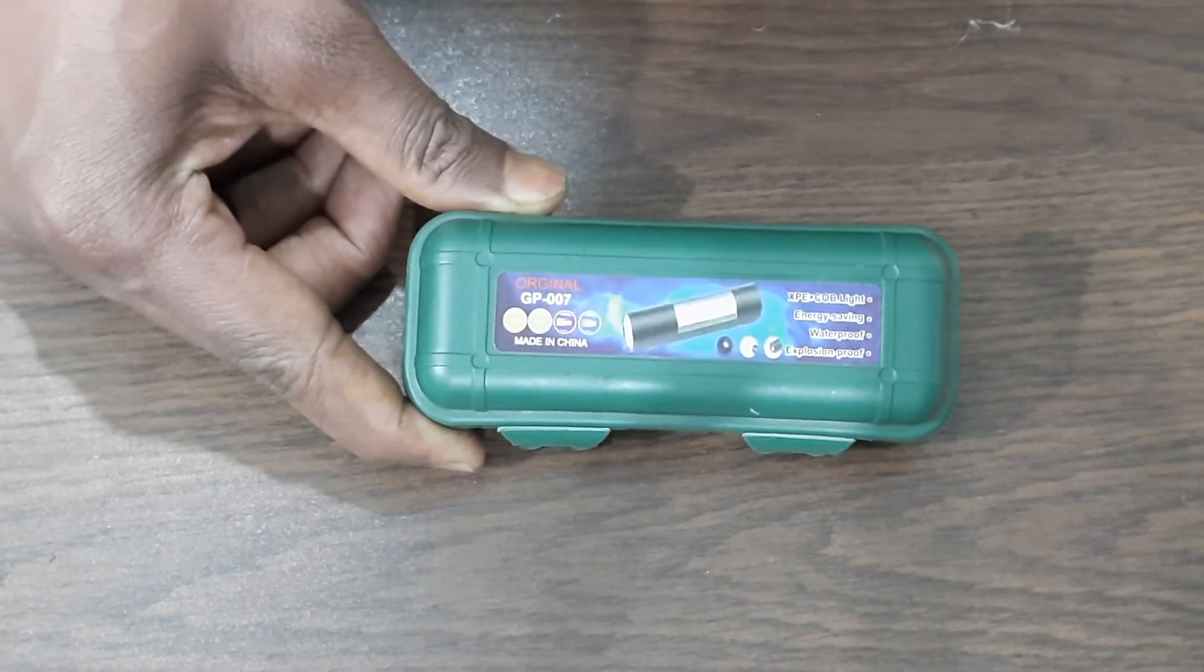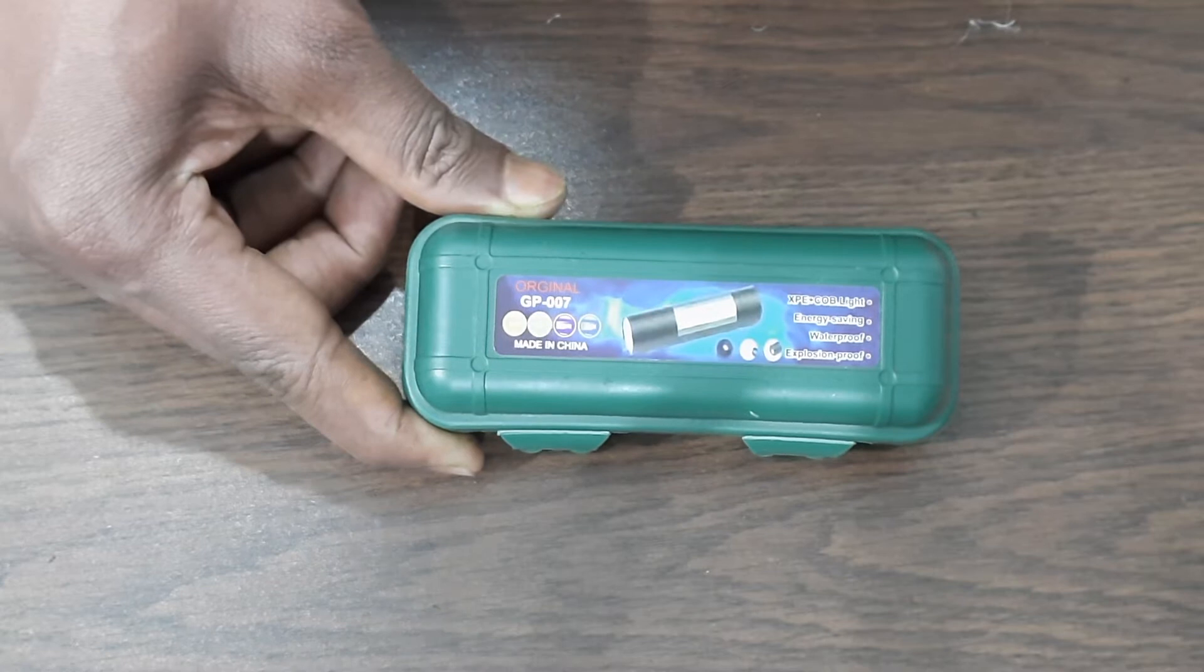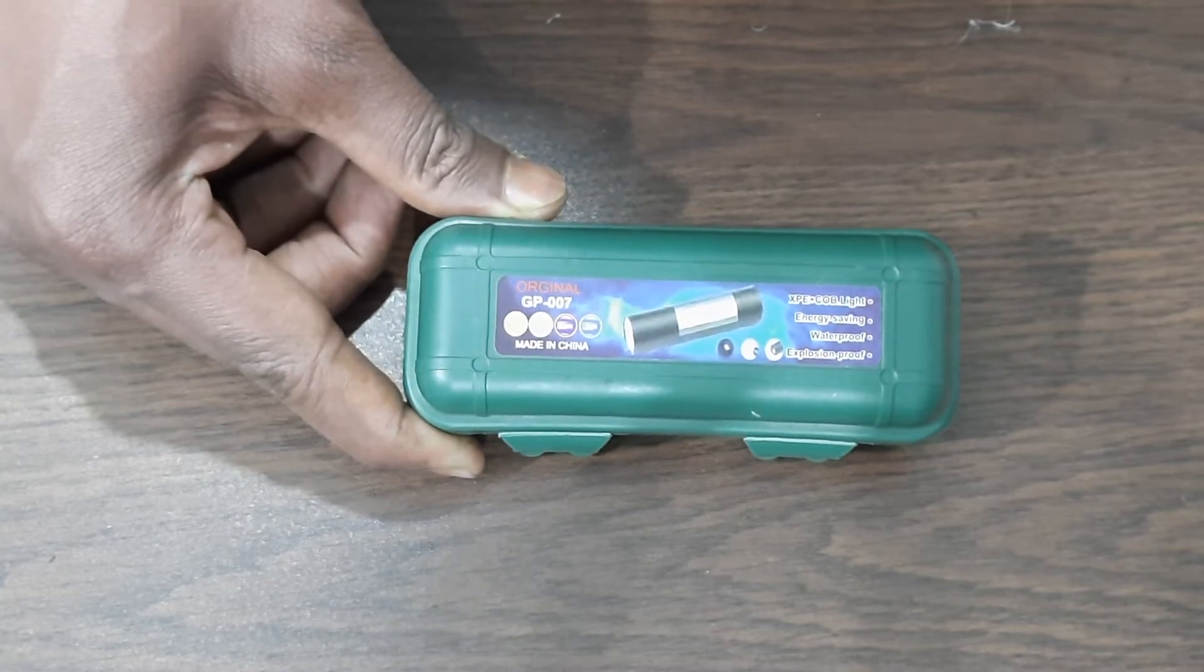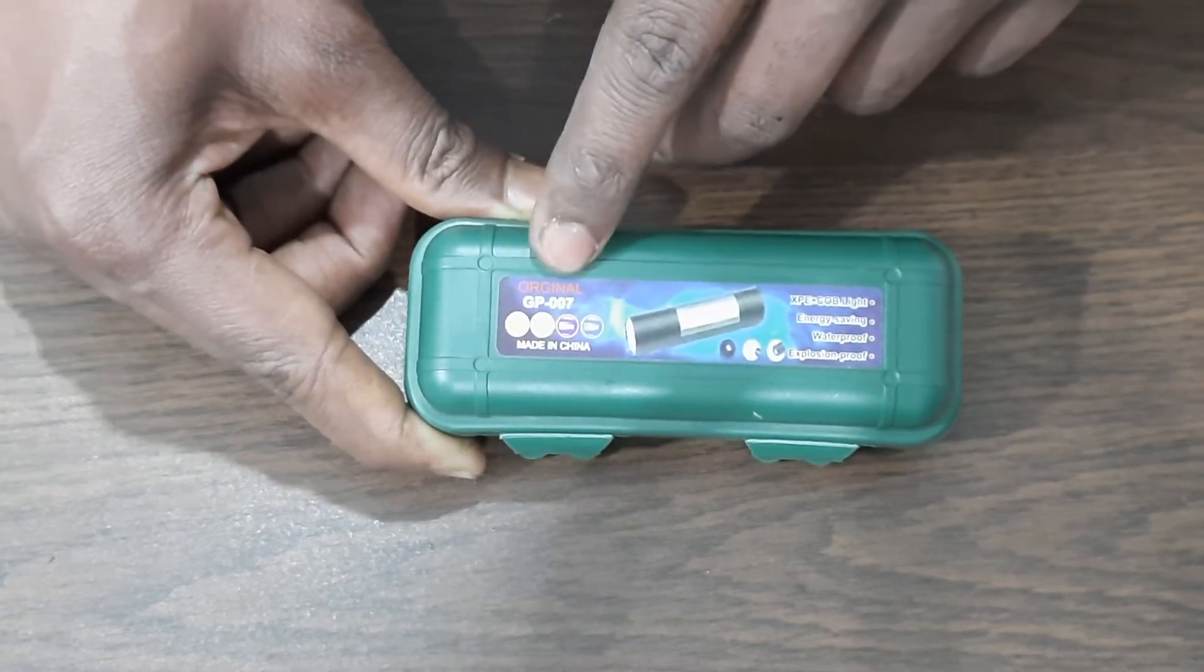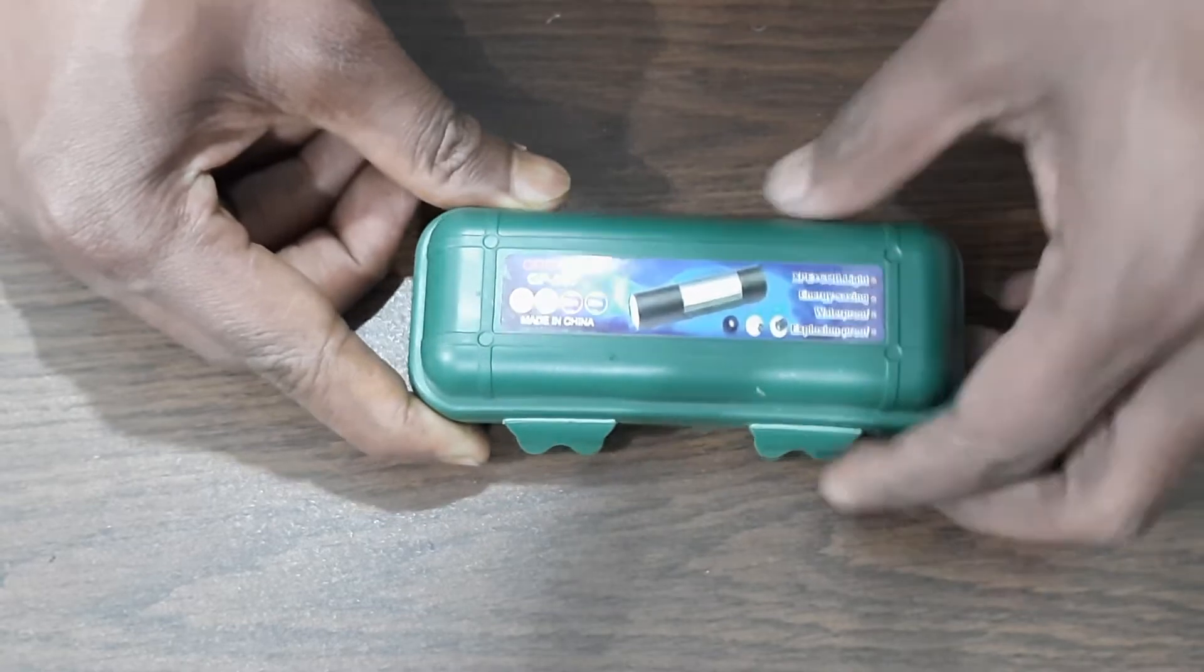Assalamualaikum, welcome to Asham's Channel. Today I have a product to show you - this mini torch light, model GP 007. This is a pocket torch light sample.